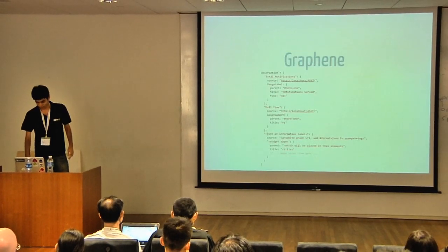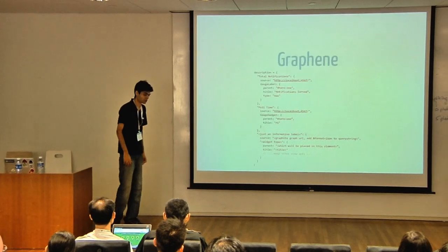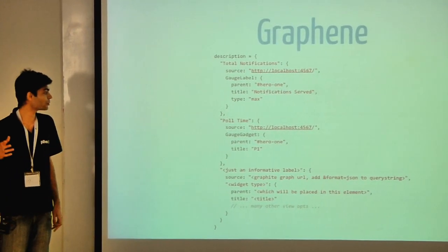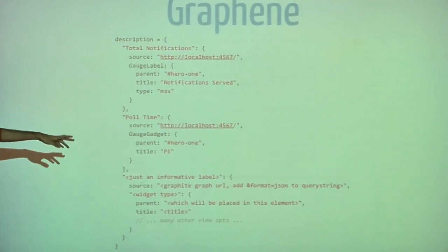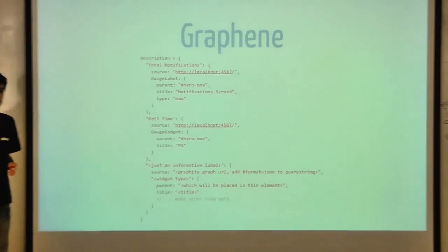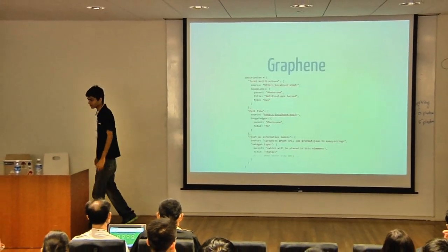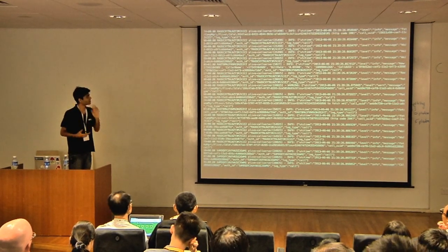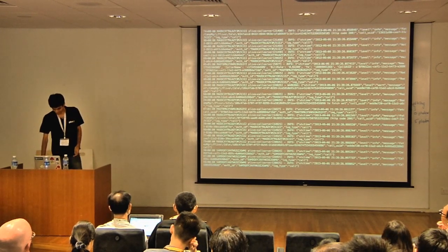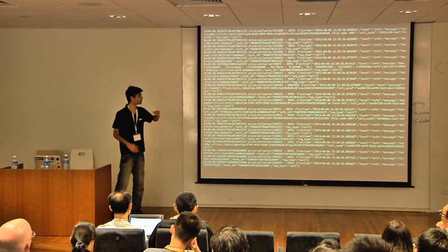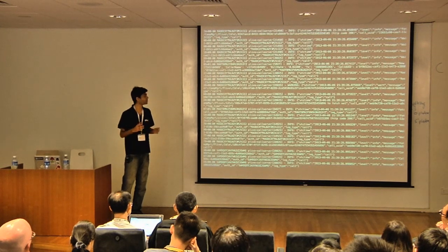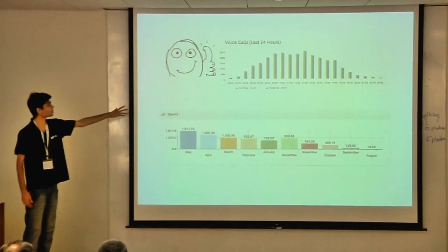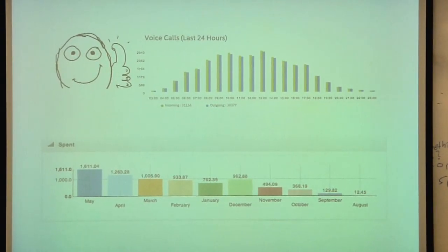That is where Graphene comes in. Graphene is a JavaScript library to generate graphs directly from your Graphite URL. Instead of using the whole render SVG format URL, you put your graph URL in JSON format and Graphene does all the hard work of generating those graphs in JavaScript — no SVG required. Now we have made sense of our data, put it into Graphite, structured it usefully, and we currently have voice call monitoring and monthly expenditure dashboards, all generated using Graphene.